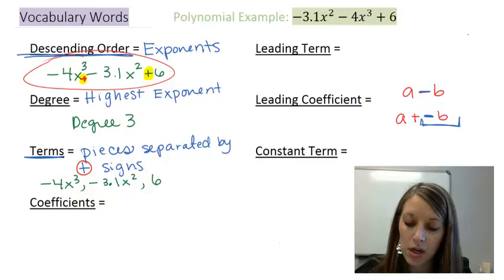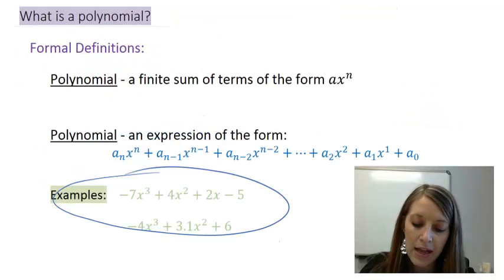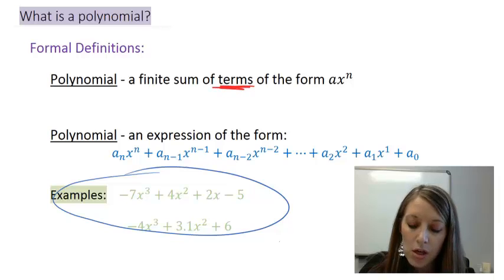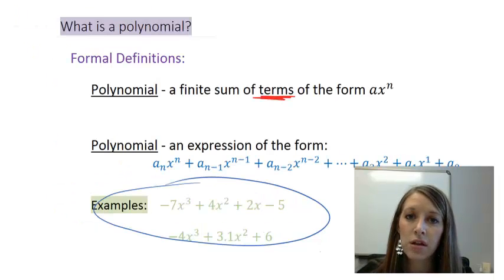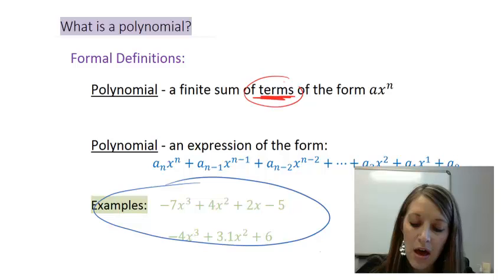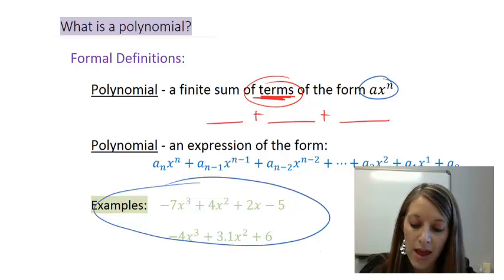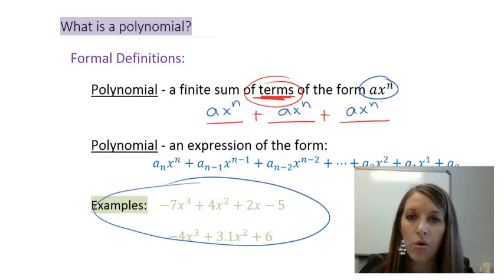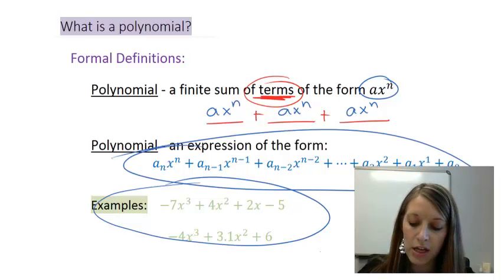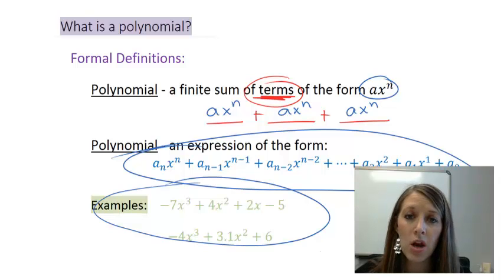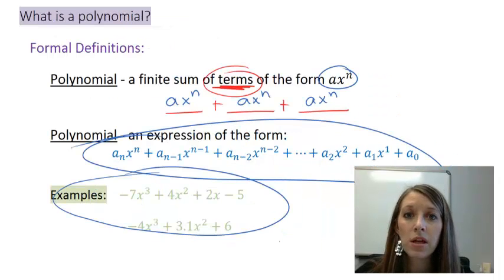I want to pause and go back to our formal definition of polynomials. It says a finite sum of terms. That's why I didn't like this definition at first — it used vocabulary we hadn't learned yet. But now, a finite sum of terms means we have a term plus a term plus a term, where each term is in the form a-sub-x to the n. This is just a condensed way of writing the long expanded version. Now it makes a little more sense what exactly a polynomial is.